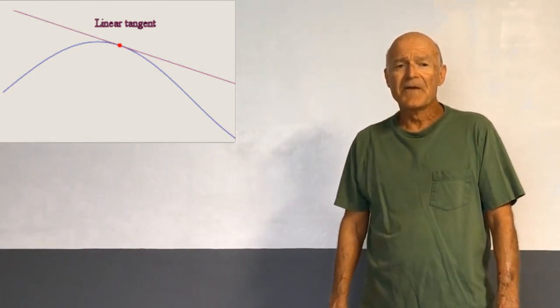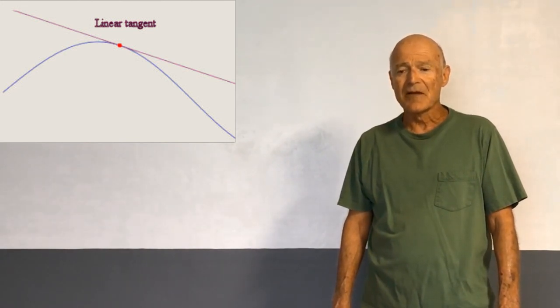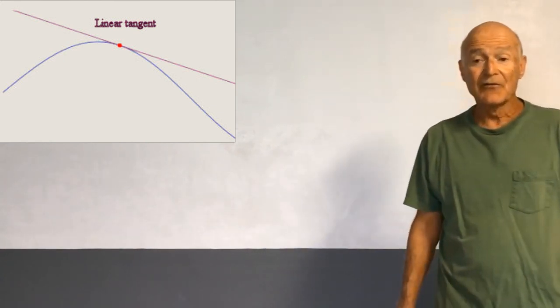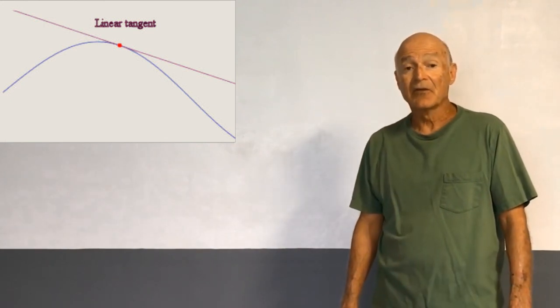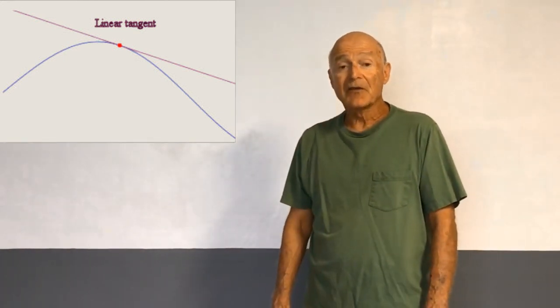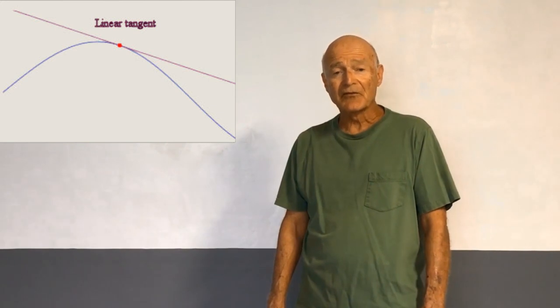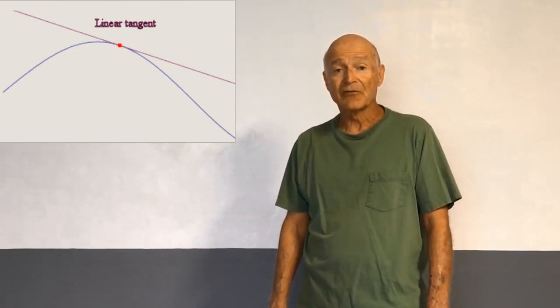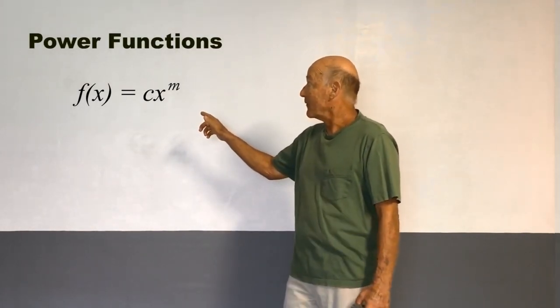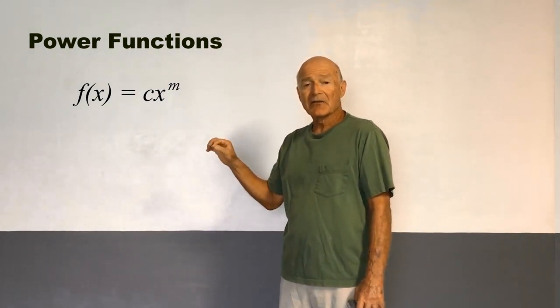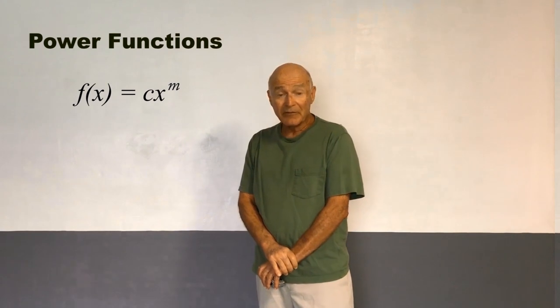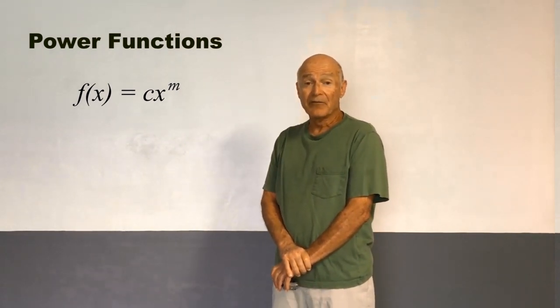In the classical calculus, there are certain functions that are really important - the linear functions. The linear functions are used as tangents to curves and to approximate curves. The bi-geometric calculus has another class of functions used in a similar way: the power functions. A power function is a function of the form f(x) = cx^m, where c and m are constants, c is positive, and x is a positive real variable.